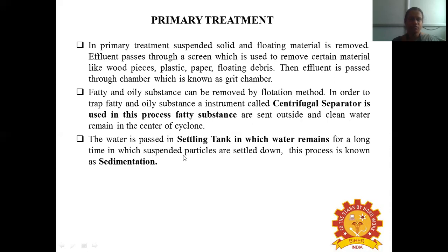The water is passed into a settling tank where it remains for a long time, allowing suspended particles to settle down. This process is known as sedimentation. Primary sedimentation is the main process occurring in primary treatment. The removal of solid and floating material like wooden pieces and plastic comes under preliminary treatment. The grit chamber also comes under preliminary treatment.